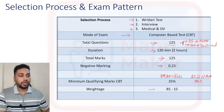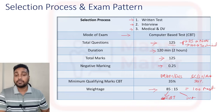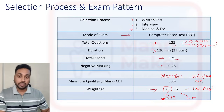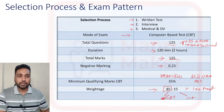The selection weightage will be: 85% from CBT and 15% from the interview. So total it will be 100 marks including written test and interview. I will explain later how to calculate the 125 marks on the basis of 85 when classes start.